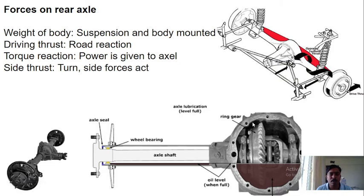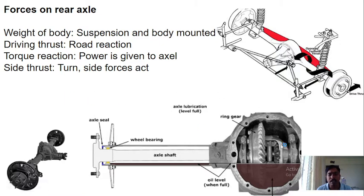Now, which are the forces coming on the axle? In most cases, the weight of the vehicle is transmitted to the axle through the axle casing. There is a suspension and the body is mounted on it. The driving thrust — that is, the force exerted due to engine power on the wheel — and that driving thrust, which is the road reaction, should be taken care of by the axle. There is also torque reaction when power is given, and side thrust in case of side forces.